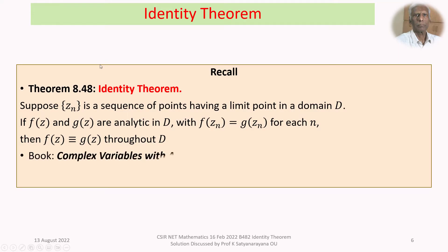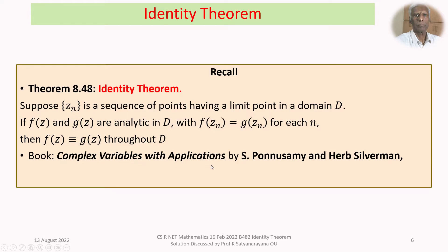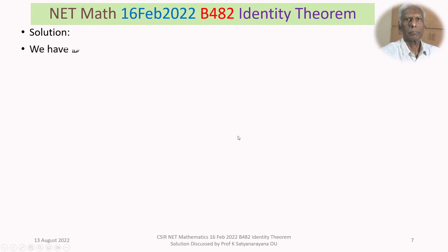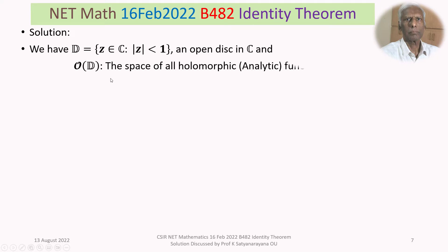You can find this as Theorem 8.48 in the textbook 'Complex Variables with Applications' by S. Ponnusamy and Herb Silverman, Birkhäuser Boston Publications, 2006. Now let us discuss the solution in detail. We have D, the open disk: the set of Z in C such that mod Z is less than 1.